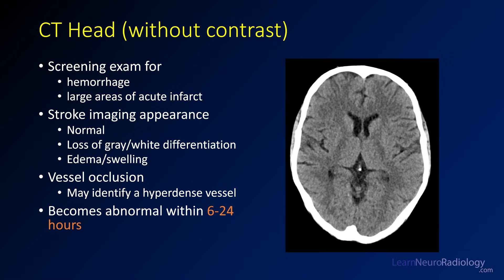The first test often done is a CT head without contrast — your screening examination to look for hemorrhage. If there's a large area of completed infarct, that decreases enthusiasm for acute treatment. Most of the time with an early stroke, you'll see a normal CT. The earliest finding is loss of gray-white differentiation. As it progresses into the three to six hour timeframe, you'll see edema and swelling. On non-contrast CT you might also identify a hyperdense vessel sign, particularly in the distal internal carotid or MCA, from thrombus within the vessel. CT generally becomes abnormal within six to 24 hours after ischemia onset.